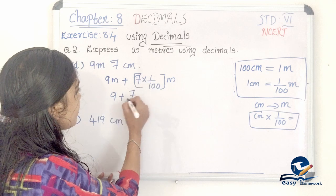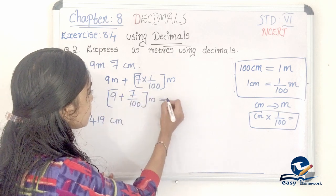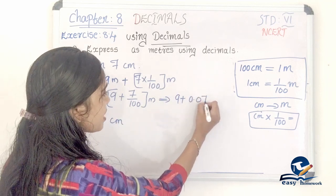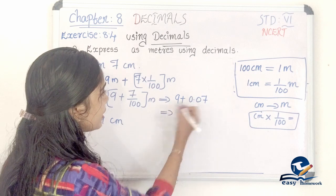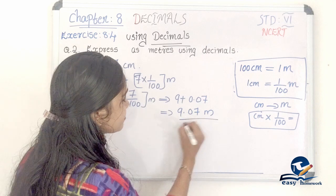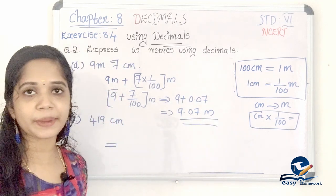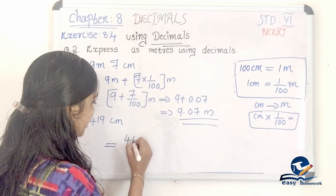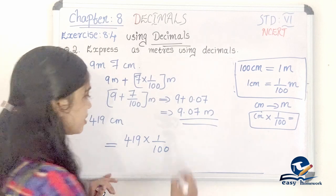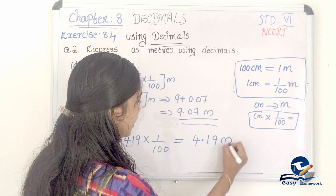Next: 9 meter 7 centimeter. We do 9 plus 7 by 100 meter, which is 9 plus 0.07, equal to 9.07 meter. Next: 419 centimeter. 419 into 1 by 100 equals 4.19 meter.